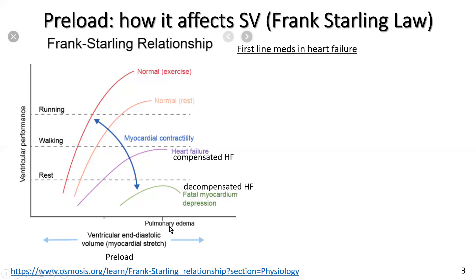Pulmonary edema is the accumulation of fluid inside the lungs themselves — the lay term being water on the lungs. This increases the distance between the pulmonary blood vessels existing in the lungs and the alveoli where gases are for gas exchange. We then get poor gas exchange, people severely out of breath and severely anxious — and in fact can even die. Pulmonary edema occurs when we reach a certain critical point for end-diastolic volume, then fluid accumulates in the lungs because of the failing heart.